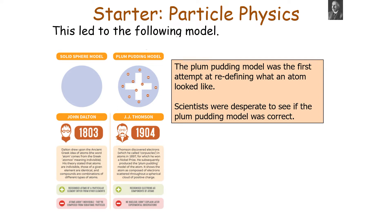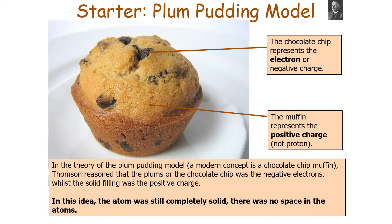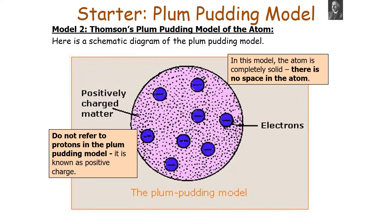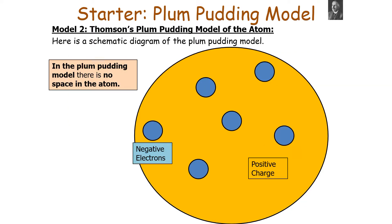The plum pudding model was the first attempt at redefining what an atom looked like. In this model, the plums or chocolate chips were the negative electrons, whilst the solid filling was the positive charge. Importantly, the atom is completely solid — there is no space at all inside the atom in the plum pudding model. We don't refer to protons in this model, only positive charge.